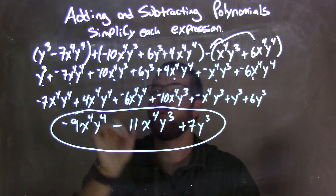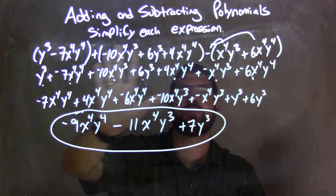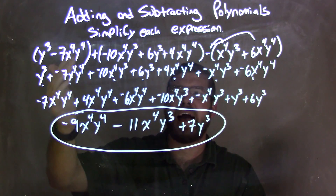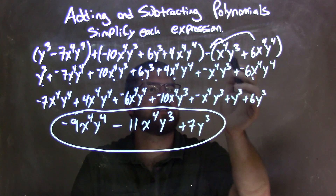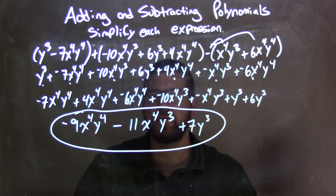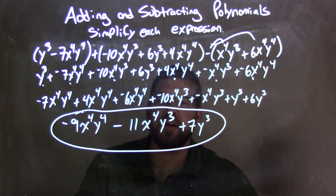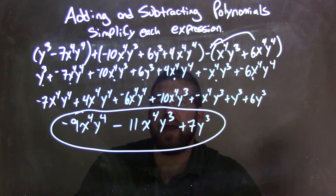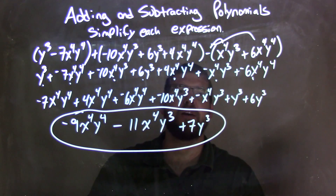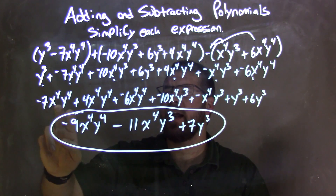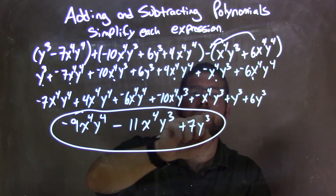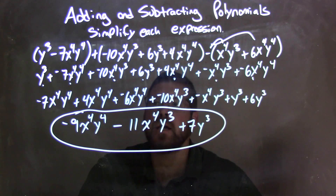So let's recap. We were given three sets of parentheses. I first looked within each parentheses to see if I could simplify — I could not. Then I made all my subtractions to be adding a negative, and in doing so I also distributed the subtraction sign to both terms. Then I rearranged using the commutative property, putting all my like terms together and my highest degrees first.